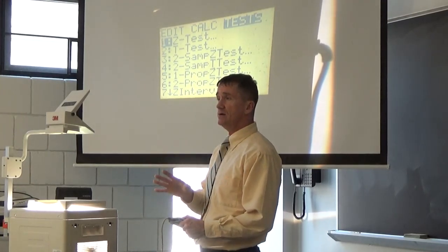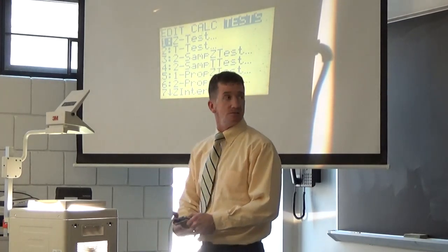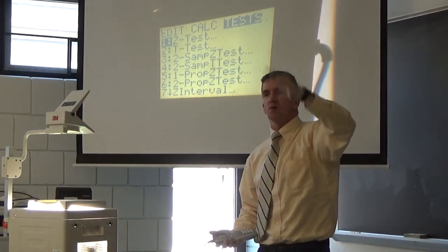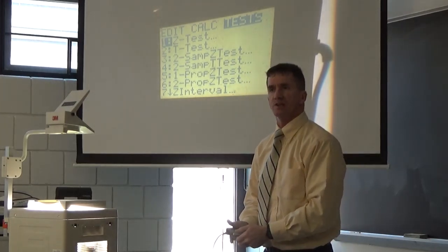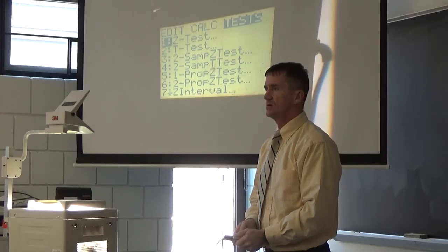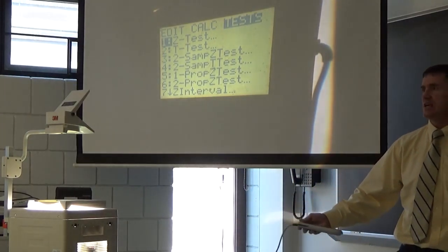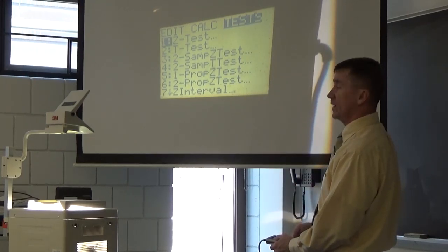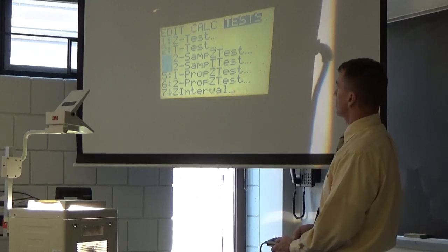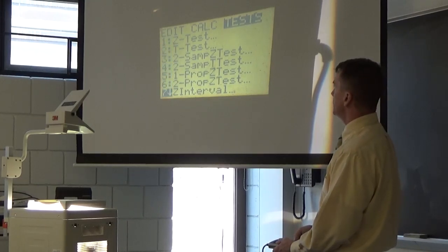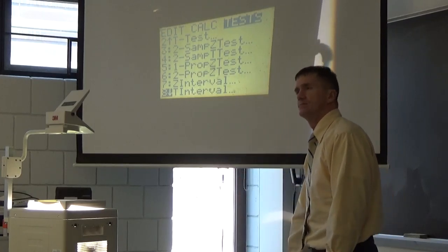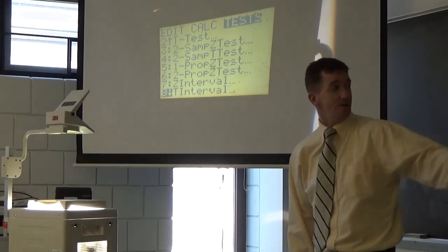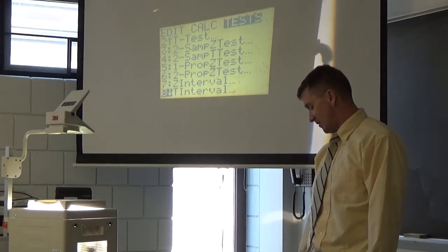This is a rock and roll button here. It's in the stat menu, in the test. Please use this. All 83 and 84 calculators have this. Stat. Test. What are we looking for? Interval, right? Last class, 9.1, we did something called a one prop Z interval. Now we're looking for something called a T interval. Where is T interval? I'm looking for a T interval. So I gotta scroll and scroll. There it is, number eight.